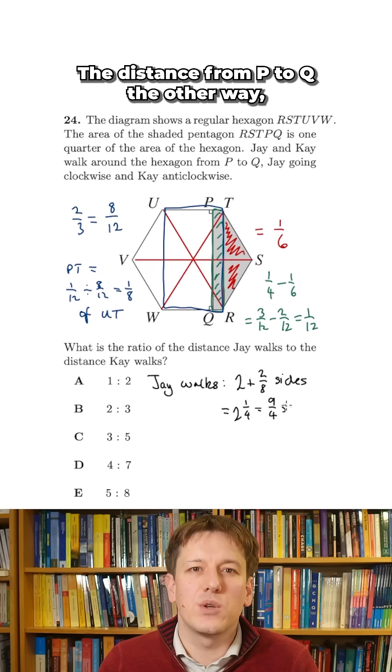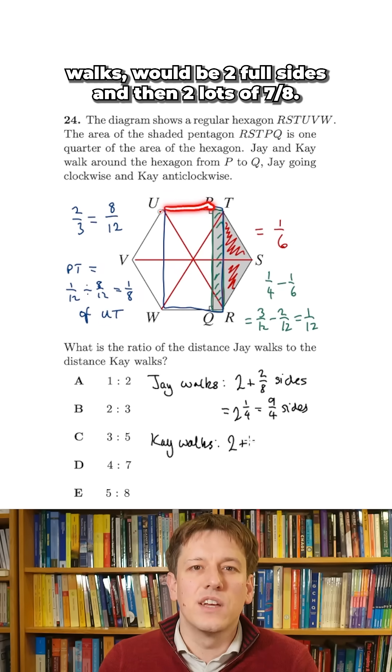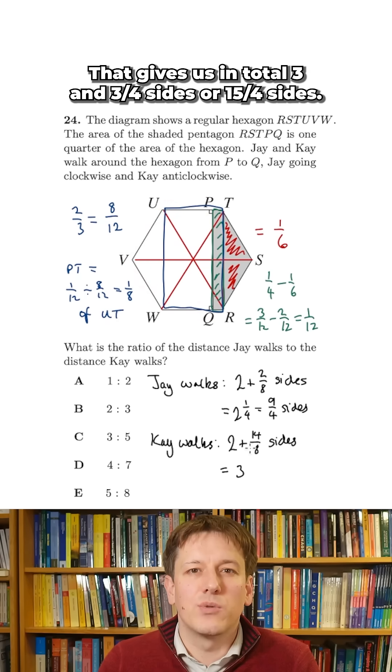The distance from P to Q the other way, the distance K walks, would be two full sides and then two lots of seven eighths, so fourteen eighths sides. That gives us in total three and three quarter sides, or fifteen over four sides.